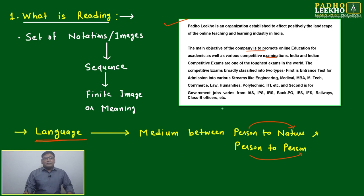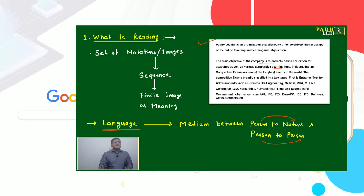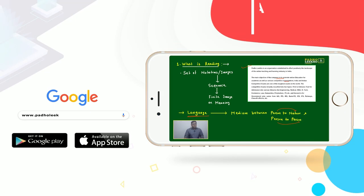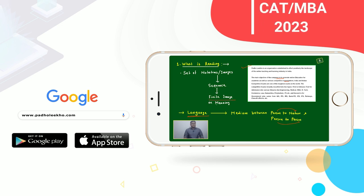If you always keep this in mind, you will feel comfortable understanding language. It is a set of notations and images — a sequence of finite images with meaning. Based on that, our brain makes finite images. Today we'll discuss a very interesting area: how the brain is working.